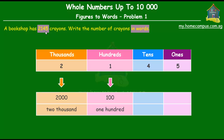Next we have four tens, and four tens we know is equal to forty — four times ten is forty — so in words that would be forty. And finally we have the five ones, so it's five times one which is five, and in words that's just five.